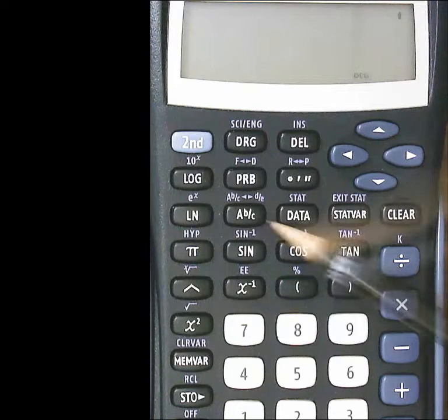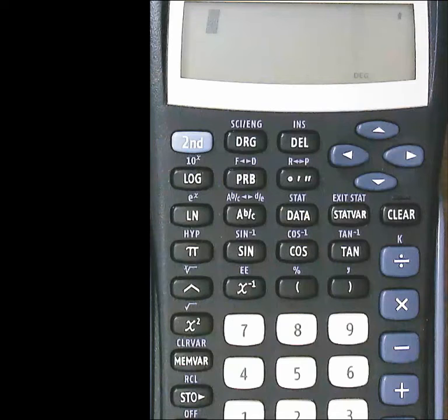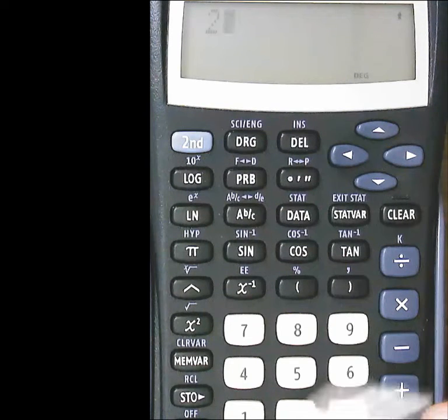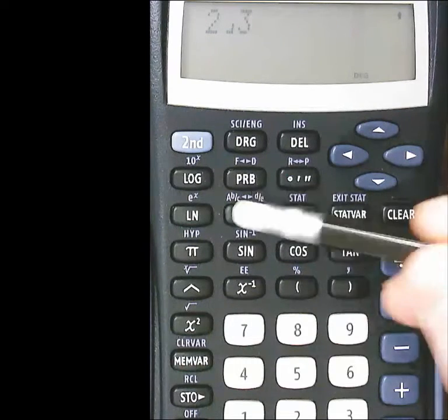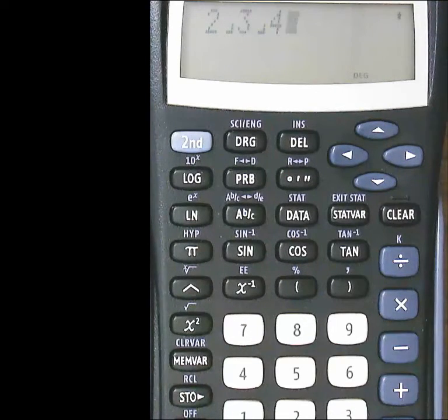And then you can use that to put in either just a fraction or a mixed number. So if you have like 2 and 3 fourths, you could do a 2, then that fraction key, and then a 3, and then a 4. That would be 2 and 3 fourths.